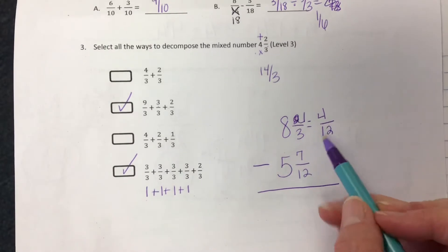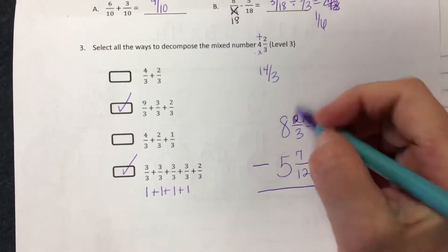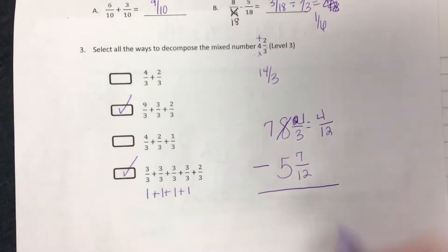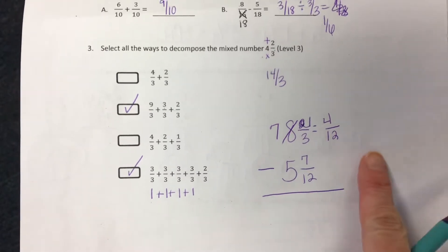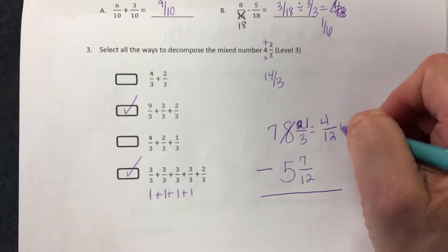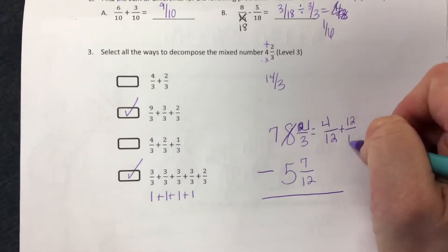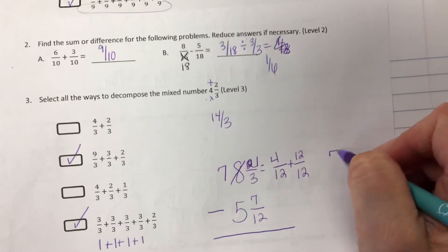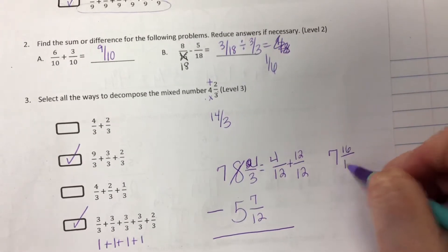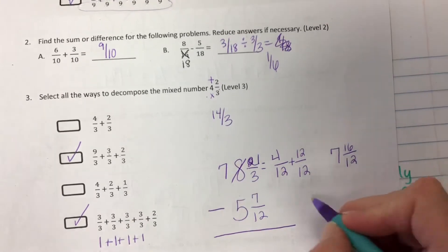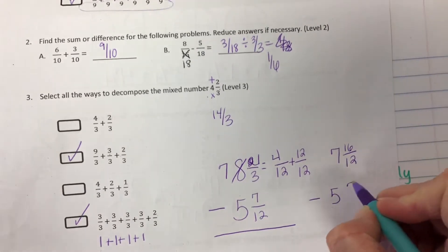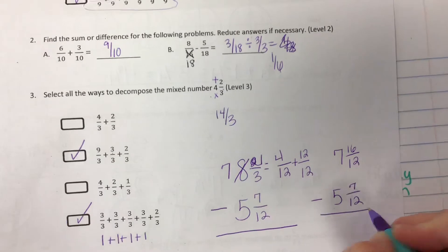Now I cannot do four twelfths minus seven twelfths so I need to regroup. I have seven and four twelfths, or sorry, I need to add my one. So now I have seven and sixteen twelfths and I really do just recommend rewriting the problem. Minus five and seven twelfths.